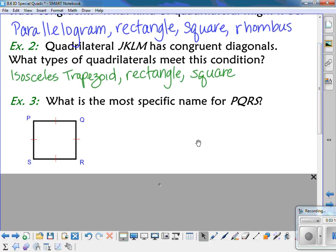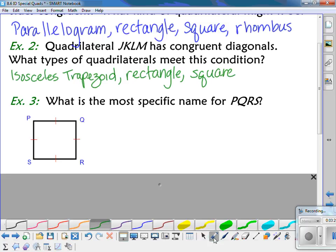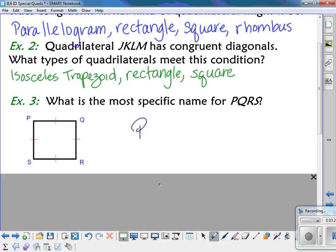Now I want to know, what is the most specific name for quadrilateral PQRS? So, for PQRS, it looks like a square, but the right angles are not marked. Therefore, I can't assume that it is a square. But I do see that all four sides are marked as congruent. So, that means it's a rhombus.